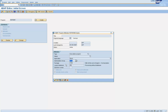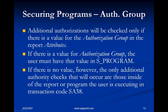The authorization group assignment of a program — whether a program is assigned to an authorization group or not — can be seen from the attributes of the program in SA38. If there is a value for the authorization group, the user must have that value in S_PROGRAM. For our example, RS_PARAM was assigned to authorization group AM40, so the user needs access to AM40 in S_PROGRAM to execute it. If there is no value, the only additional authority checks that will occur are those inside the report or program being executed via SA38.